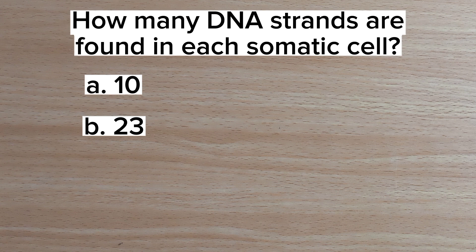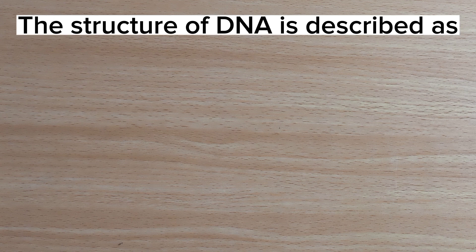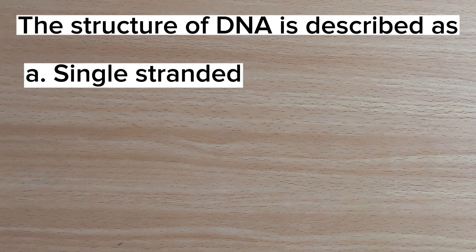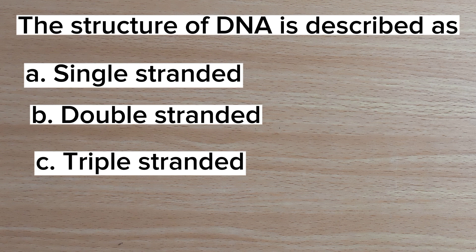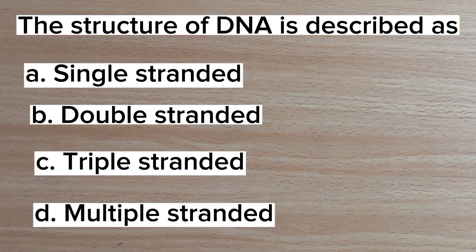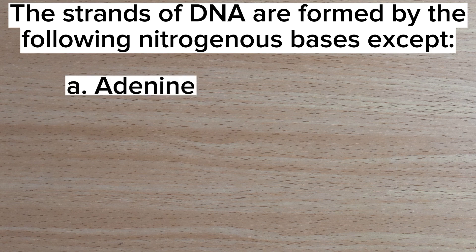Number five: how many DNA strands are found in each somatic cell? A. 10, B. 23, C. 46, D. 92. Answer: D. 92. Number six: the structure of DNA is described as — A. single-stranded, B. double-stranded, C. triple-stranded, D. multiple-stranded. Answer: B. Double-stranded.